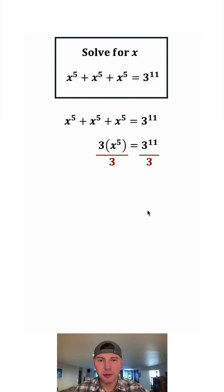And then we can divide both sides of the equation by three. On the left hand side these threes are going to cancel each other out so we have x to the fifth.